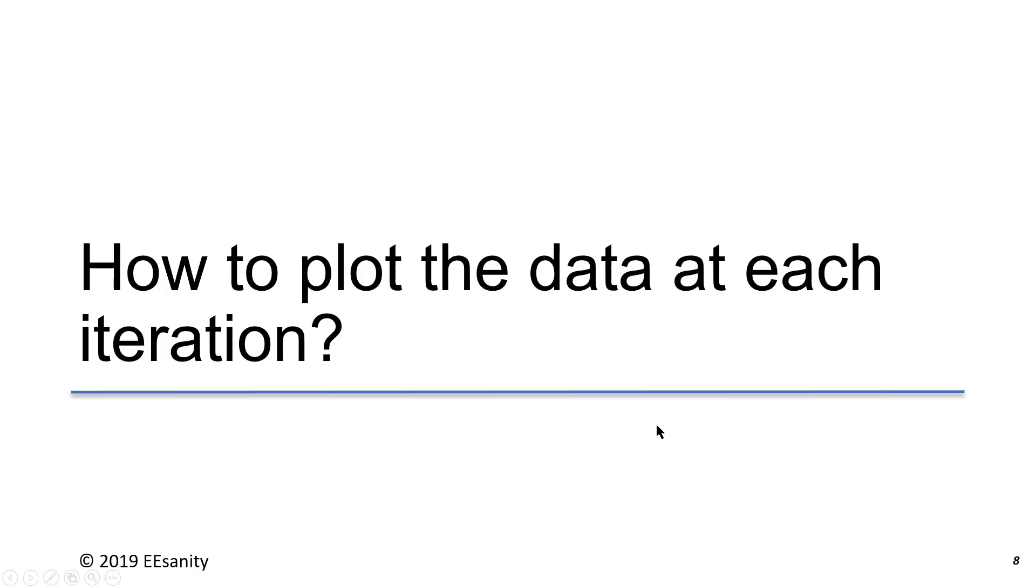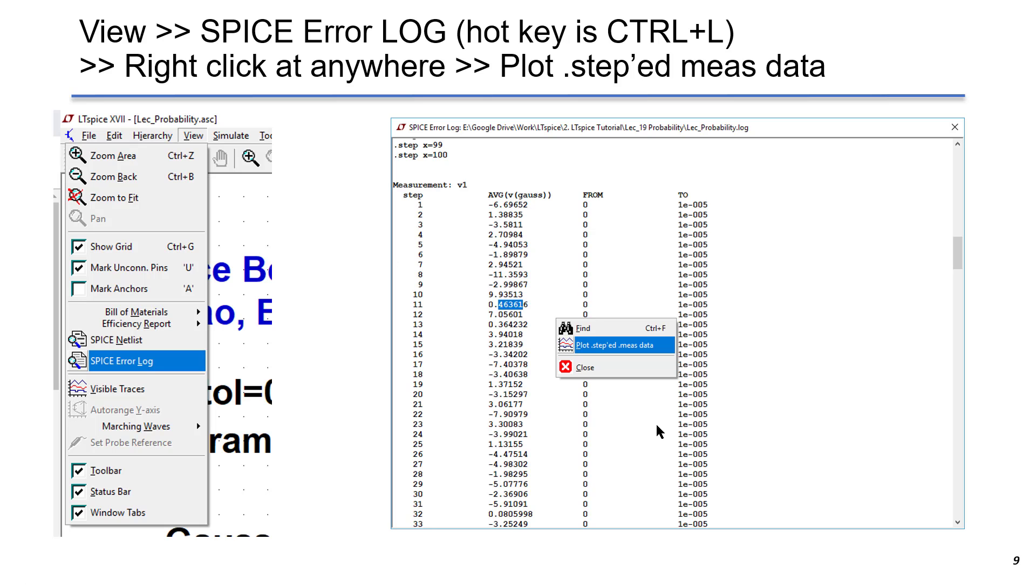So how to plot the data at each iteration. Now, we go to View, and go to Spice Error Log. Hotkey is control L. We right-click over the data, and choose Plot.